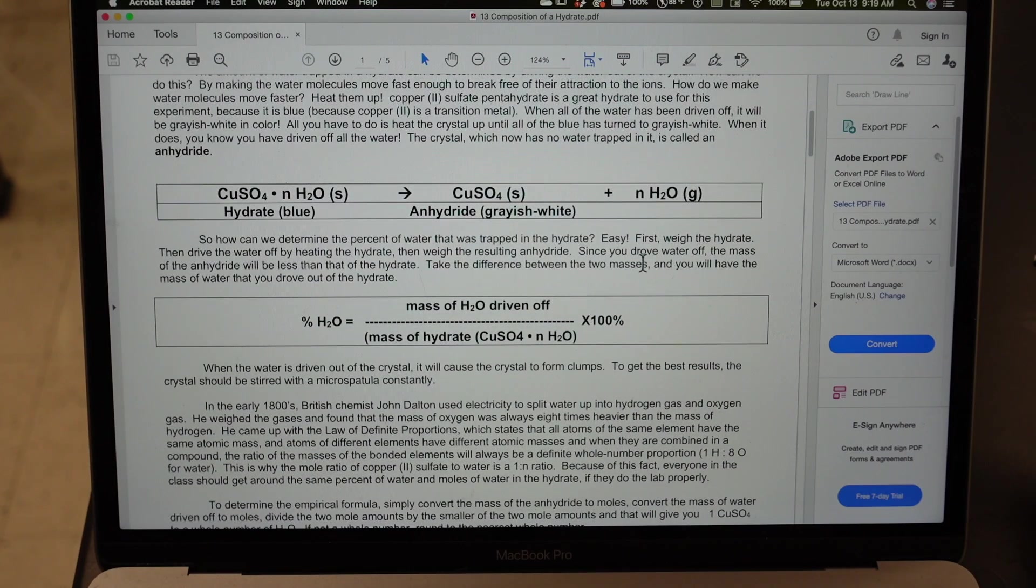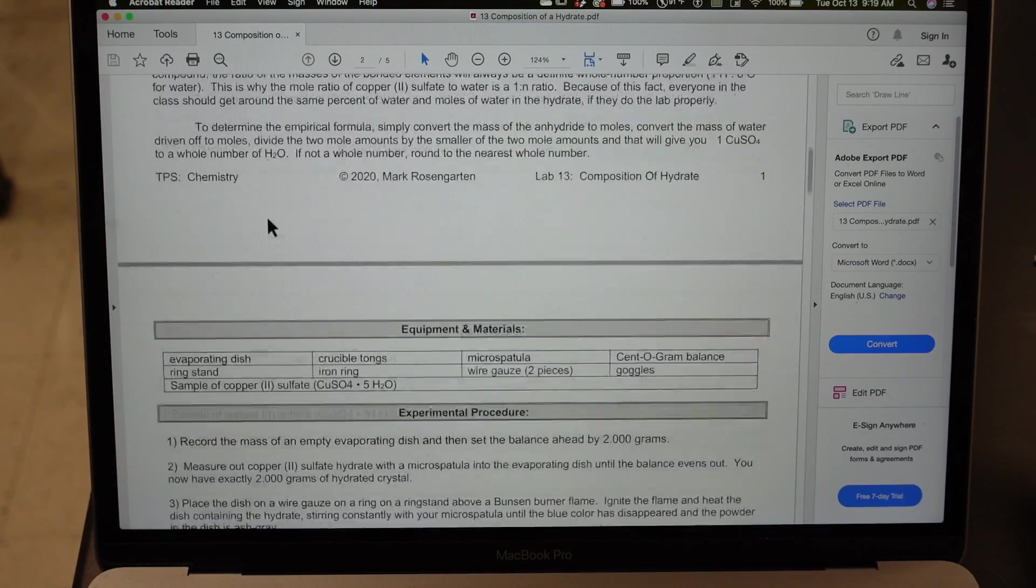So to find the percent of water, we take the mass of the water we drove out and we divide it by the mass of the original hydrate. Easy enough.